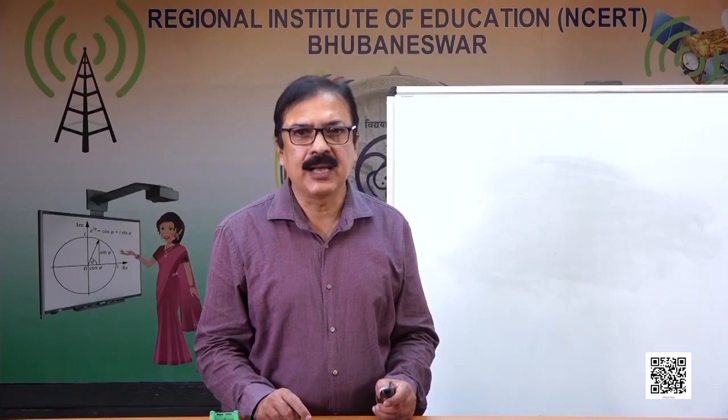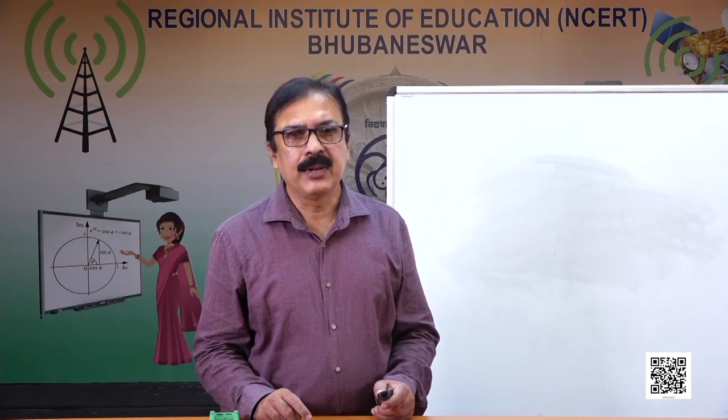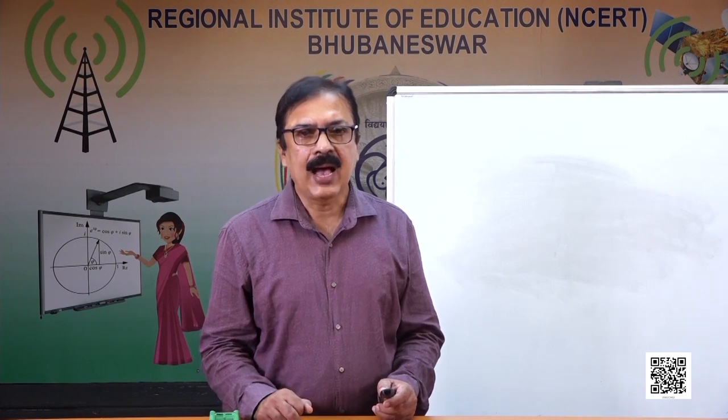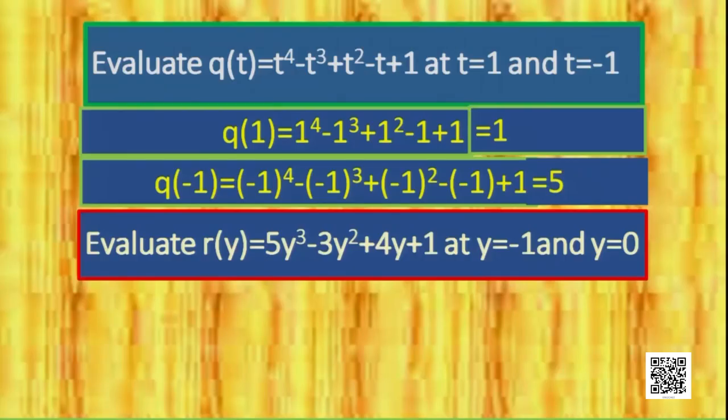Let's see another example. R(y) = 5y³ − 3y² + 4y + 1, and we need to evaluate this polynomial at y = −1 and y = 0.